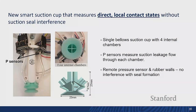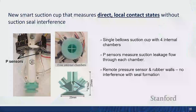To tackle this problem, I propose a smart suction cup that can directly measure local contacts without interfering with suction seal formation. We redesigned a single-bellows suction cup to have four internal chambers and connected a pressure sensor to each chamber. The pressure sensors measure leakage flow through each chamber, and because they are placed remotely from the suction seal, they don't interfere with suction seal formation.